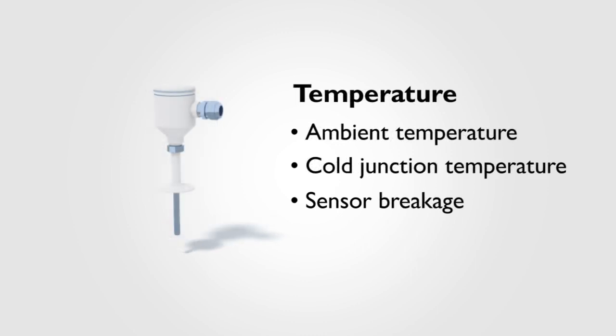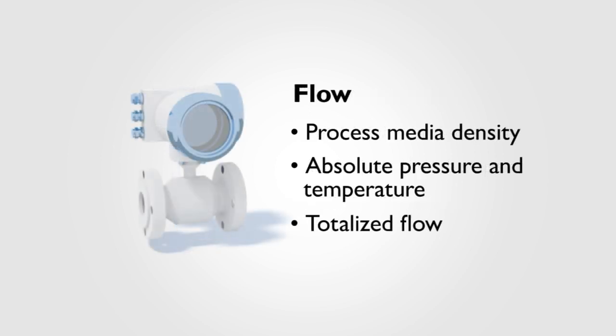Temperature transmitters may also provide process temperature, cold junction compensation values, and ambient temperature. Coriolis meters deliver information such as mass flow, density, and temperature.